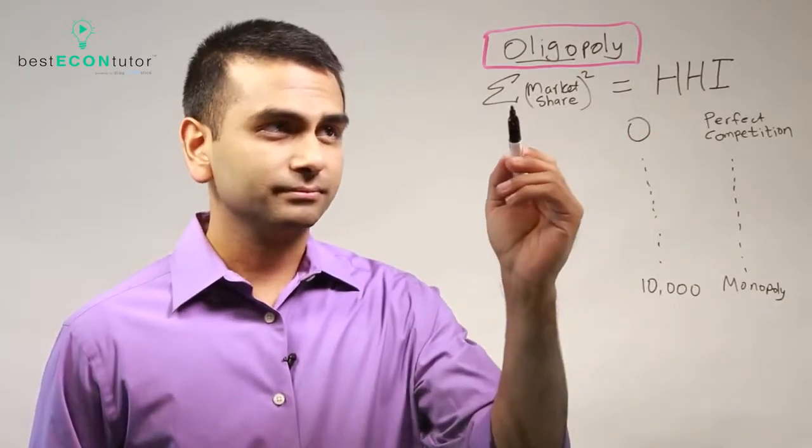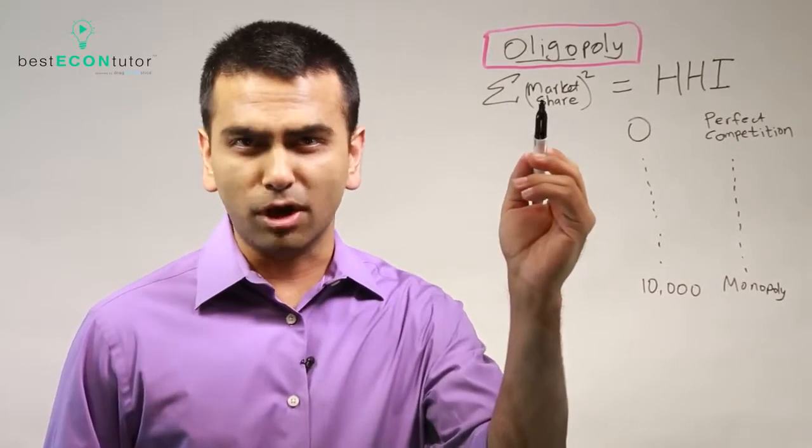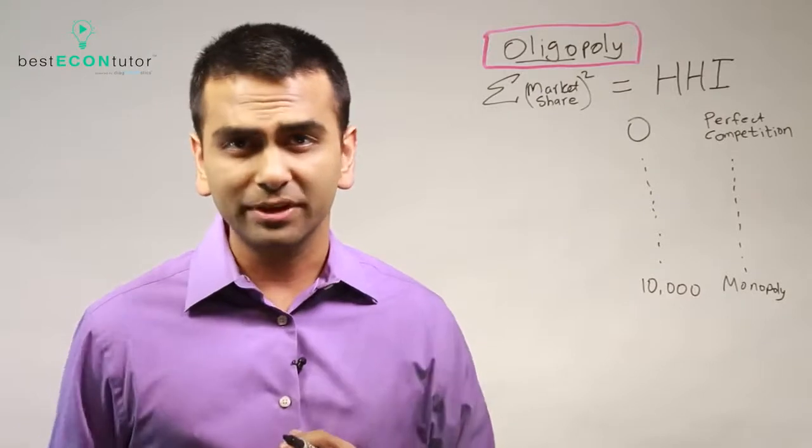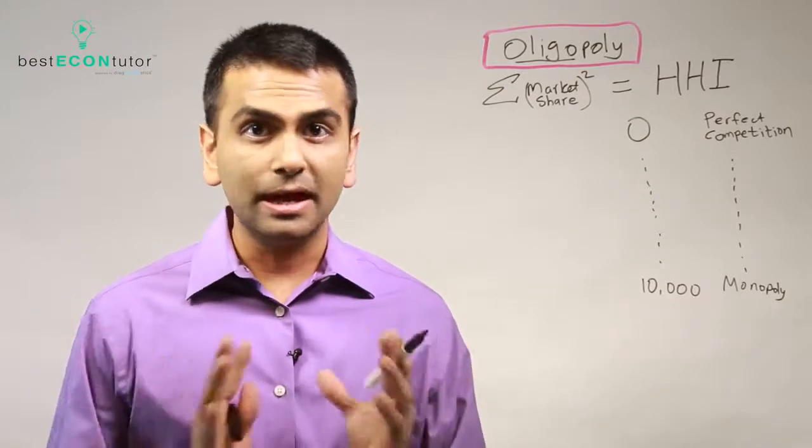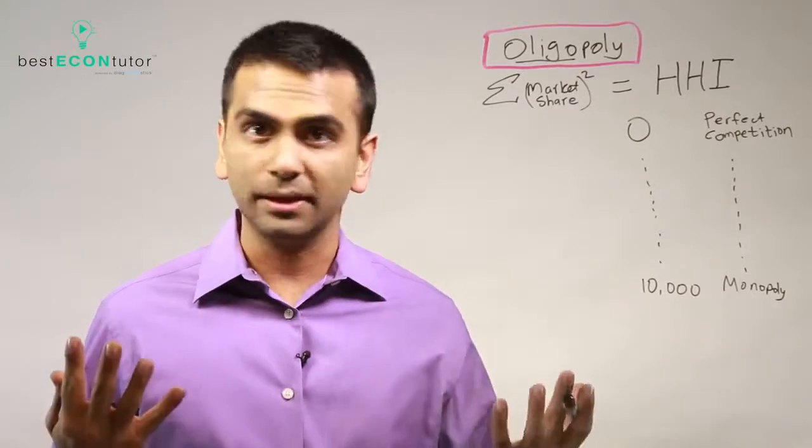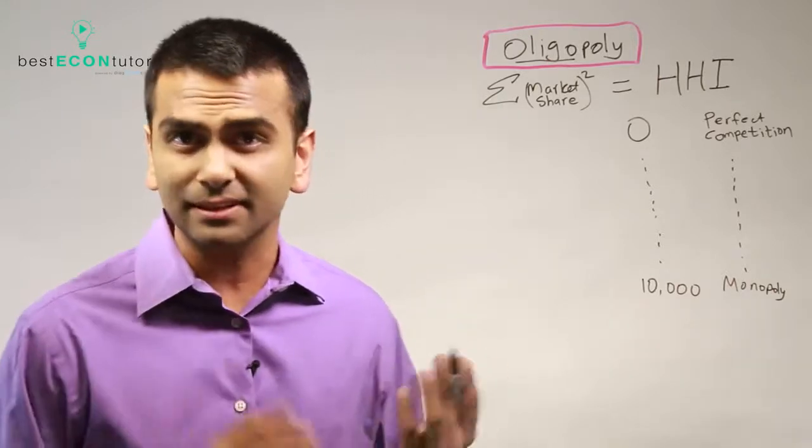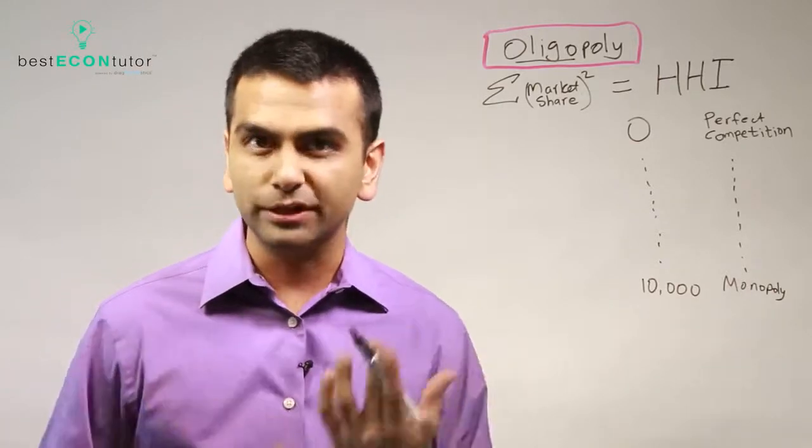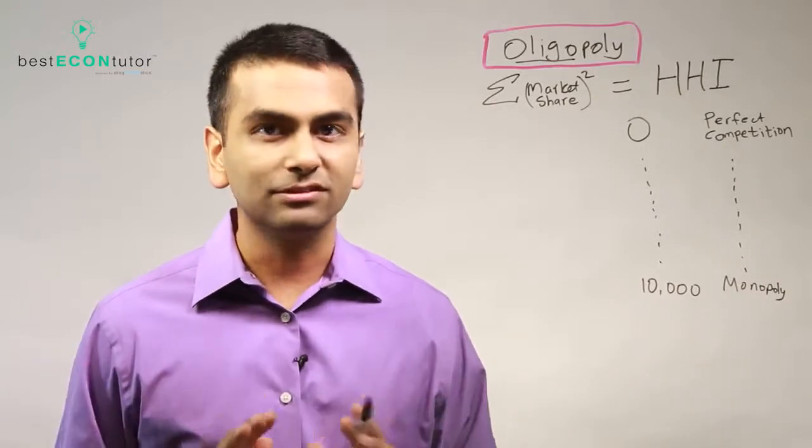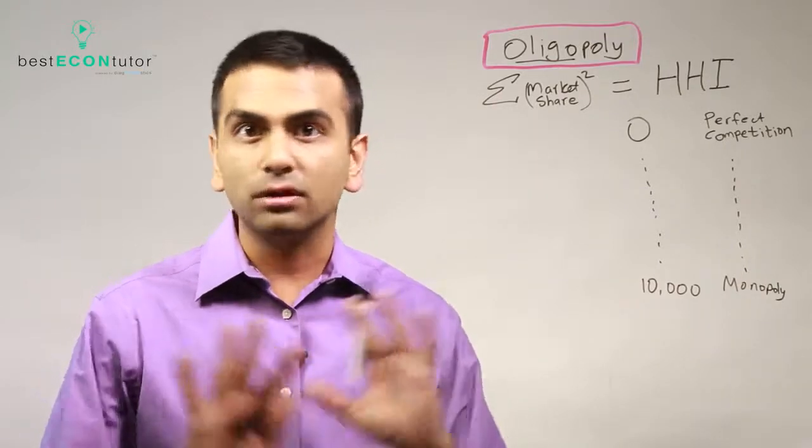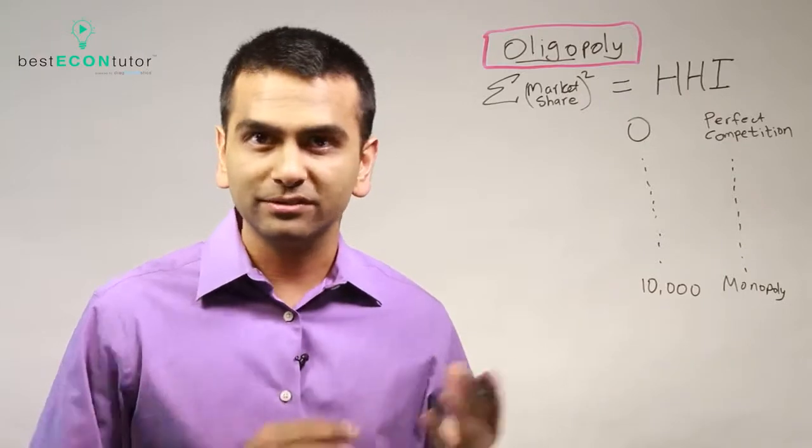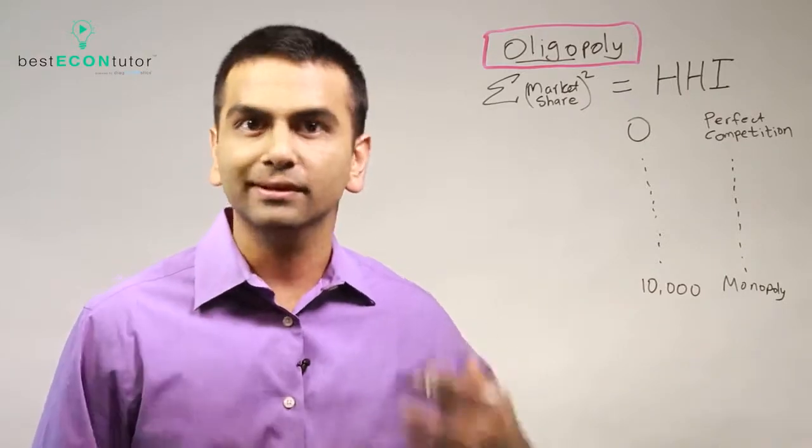Now the formula is just the sum of the market share squared. So what does that even mean? Let's say you have just two businesses, let's say Coke and Pepsi. They're the only two providers of soda hypothetically and let's say that they both have about 50% of the market share. What that means is 50% of all customers for sodas go to Coke and the other 50% go to Pepsi.